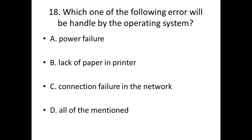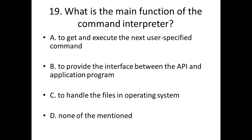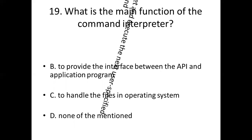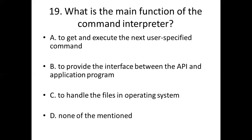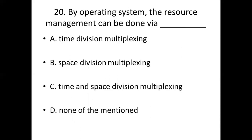Nineteenth bit: What is the main function of the command interpreter? Option A: To get and execute the next user specified command. Option B: To provide the interface between the API and application program. Option C: To handle the files in the operating system. Option D: None of the mentioned. Answer: Option A, to get and execute the next user specified command.